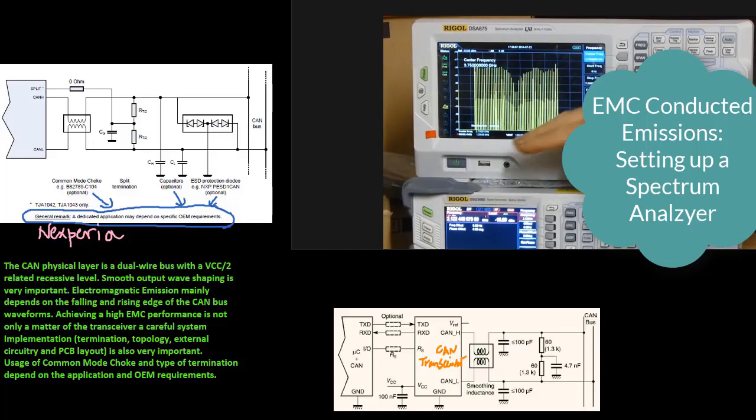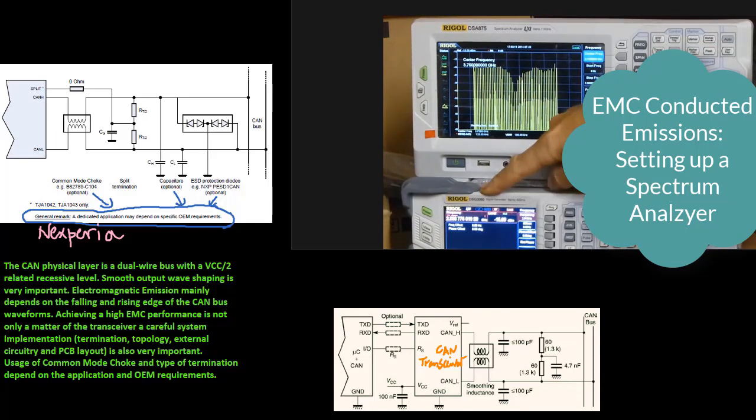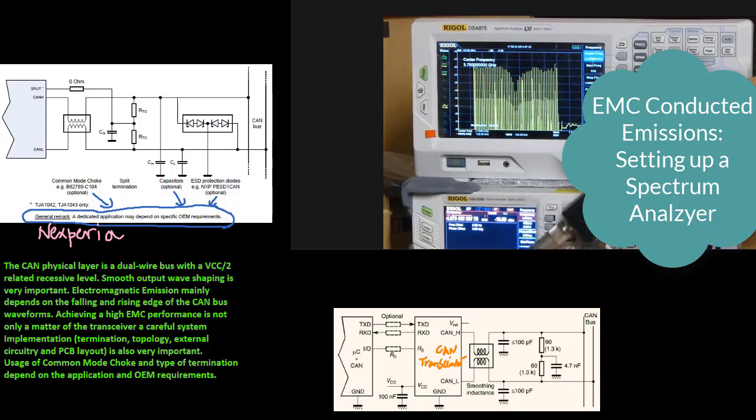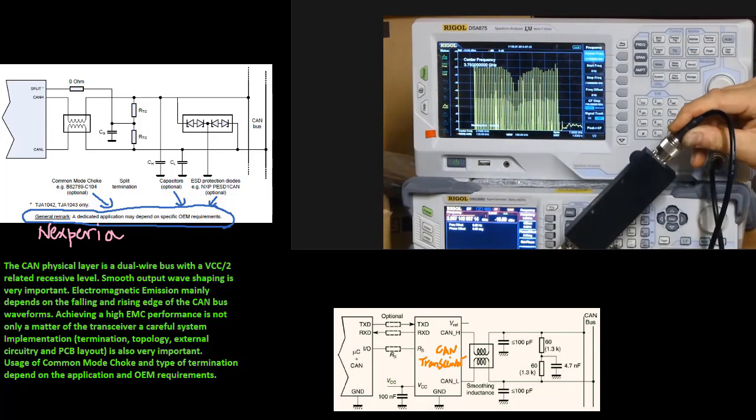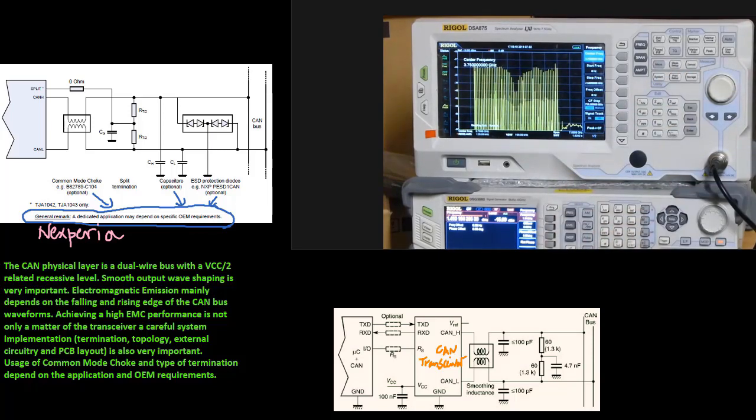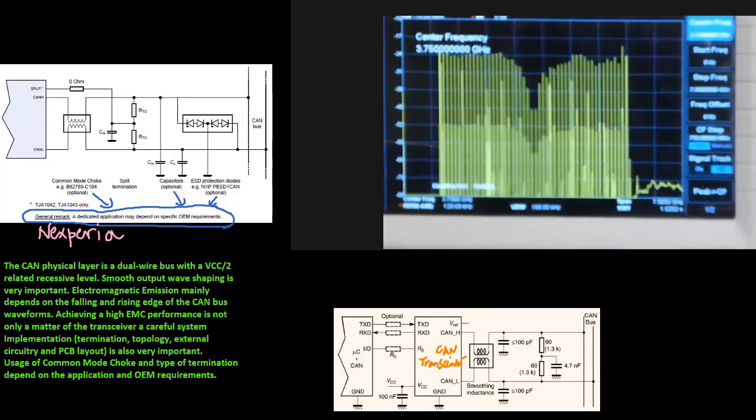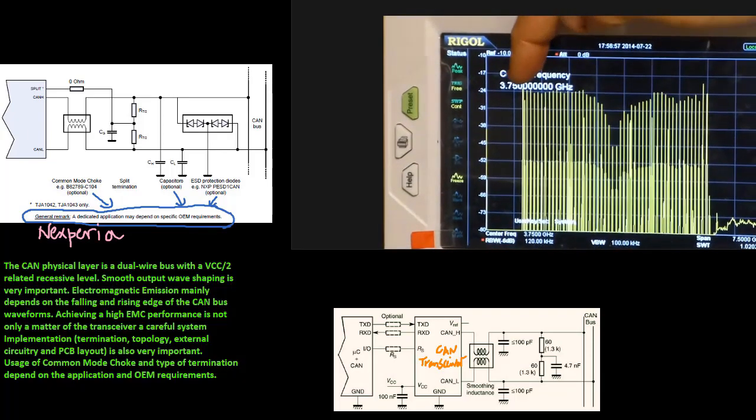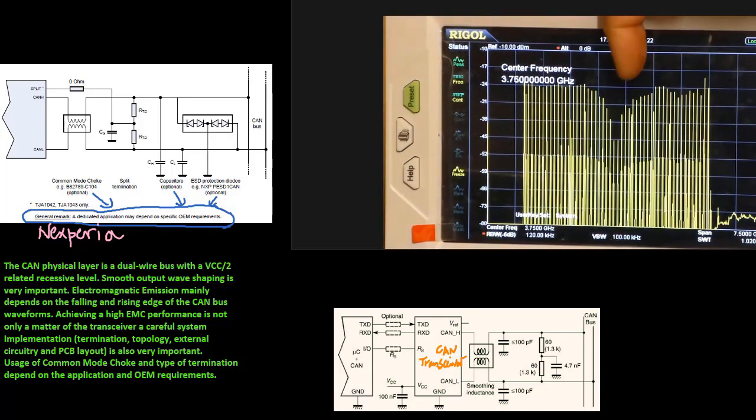The CAN physical layer is a duo-wire bus with a VCC by 2 related recessive level. Smooth output wave shaping is very important. Electromagnetic emission mainly depends on the falling and rising edge of the CAN bus waveforms. Achieving a high EMC performance is not only a matter of the transceiver, a careful system implementation, termination, topology, external circuitry and PCB layout is also very important.